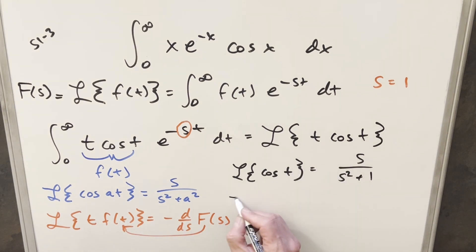And so for this right here, we're just going to need to use this second formula for Laplace of t cosine of t. First, we're going to have this minus sign out front. Then we'll take the derivative of this, just using the quotient rule.